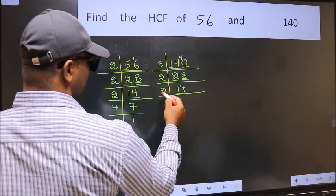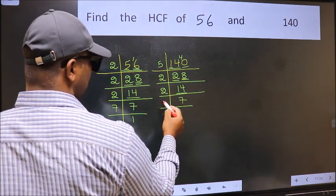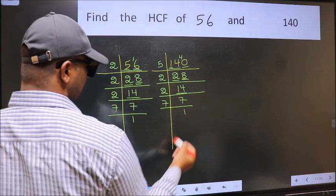Now 14 is 2 times 7 equals 14. Now 7 is a prime number, so 7 times 1 is 7.